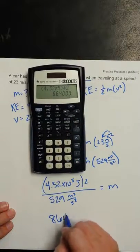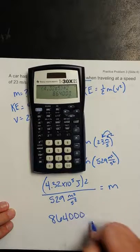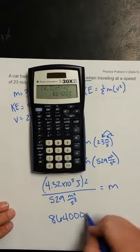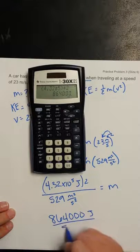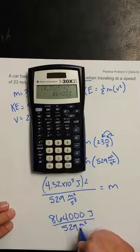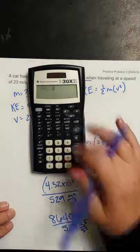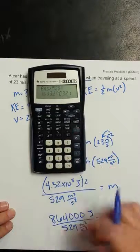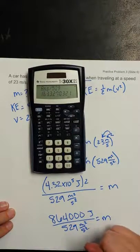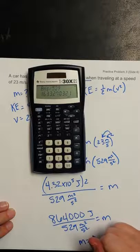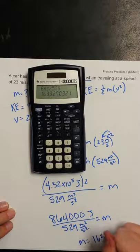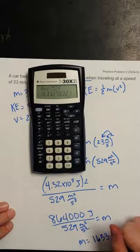So I've got 864,000, or 8.64 times 10 to the fifth joules, divided by 529 meters squared per second squared. Okay, let's take that and divide it by 529. And that's going to give us a mass of 1,633 kilograms.